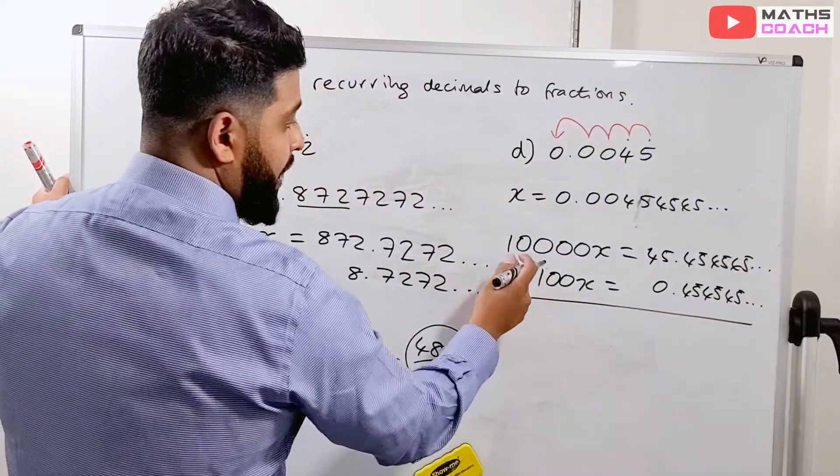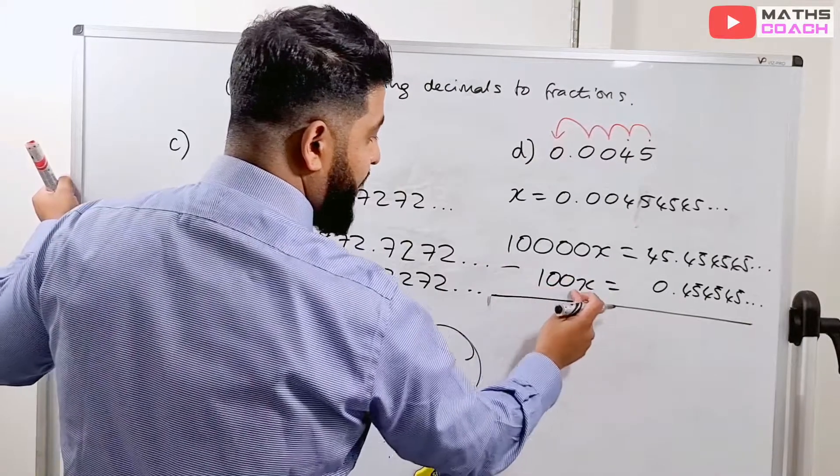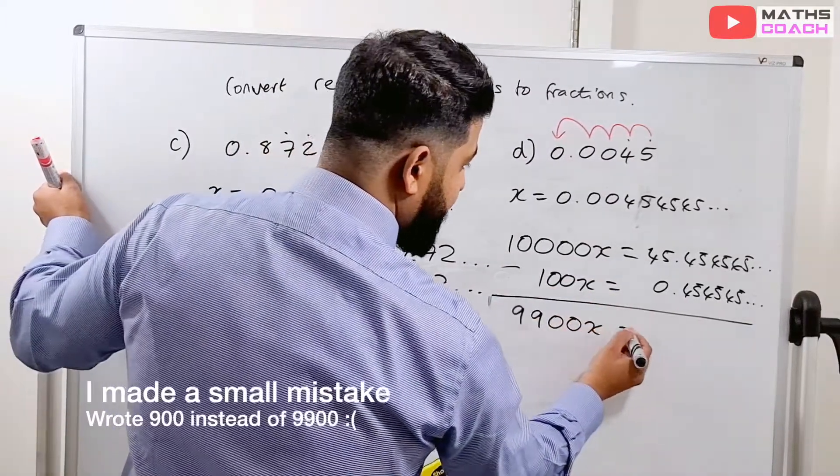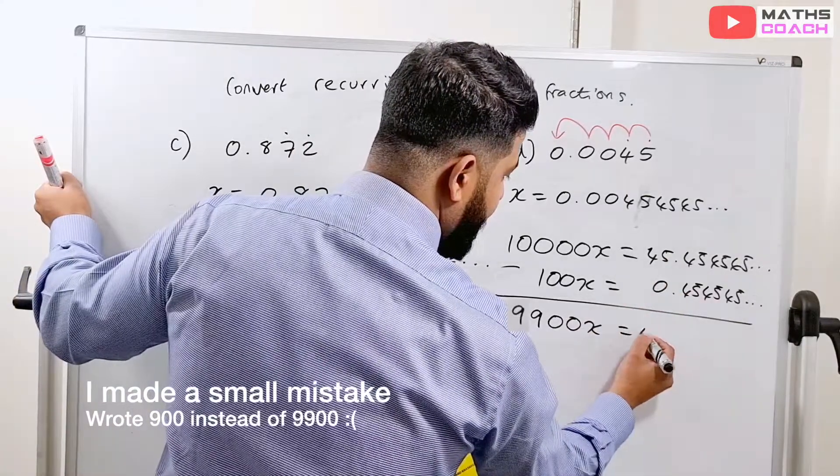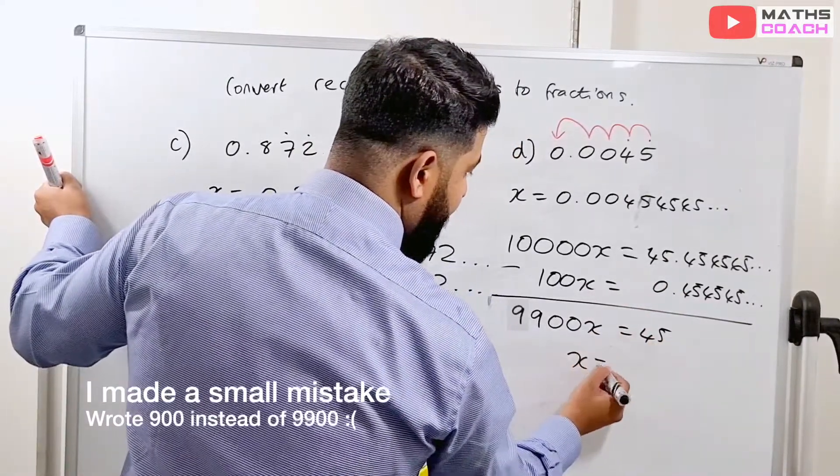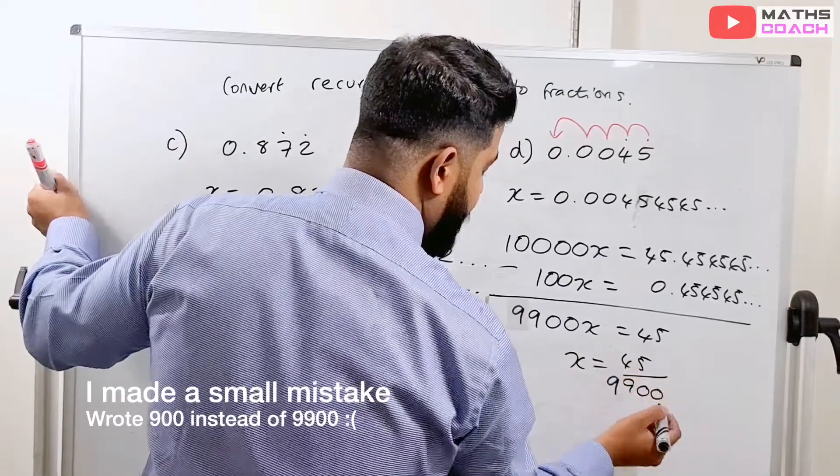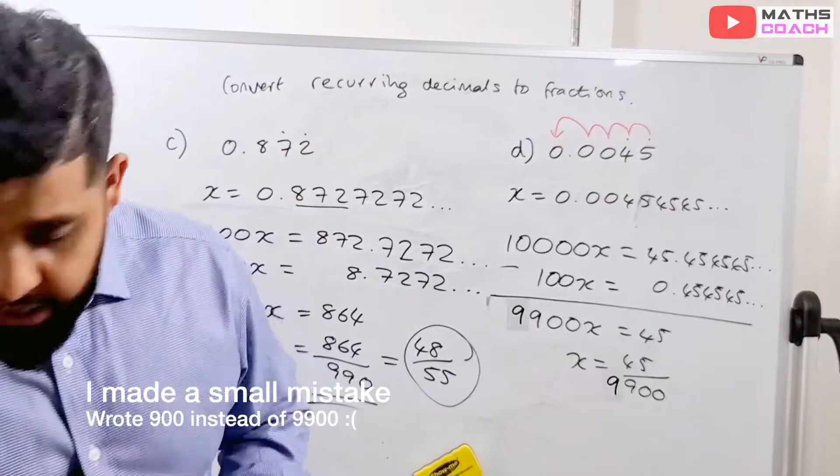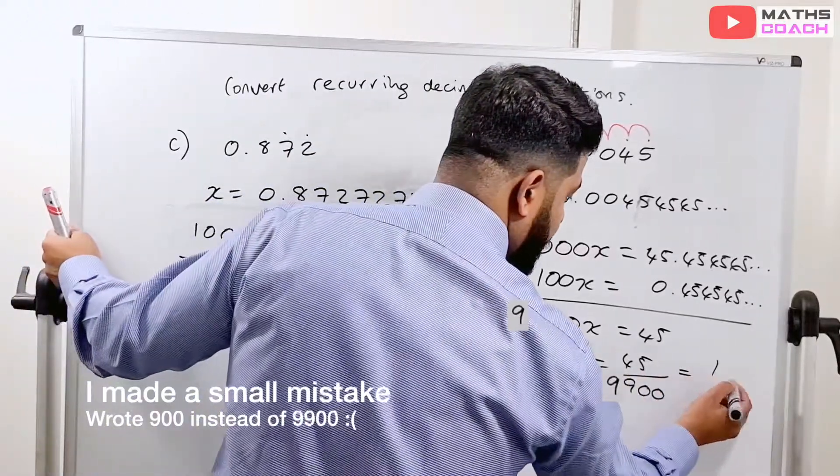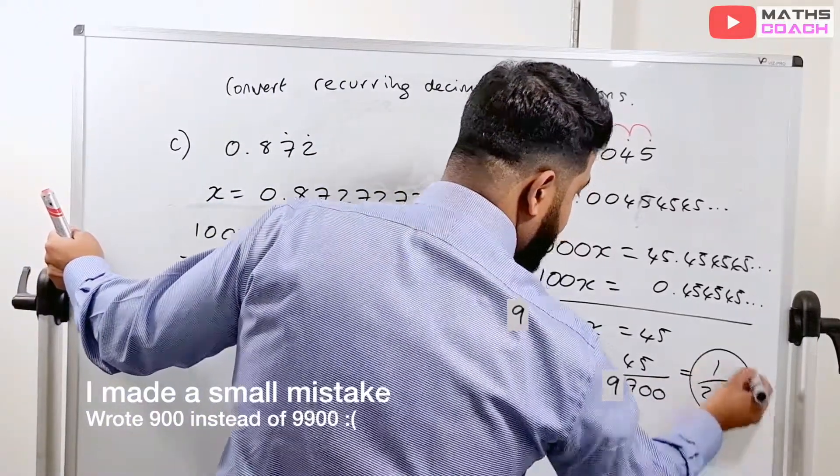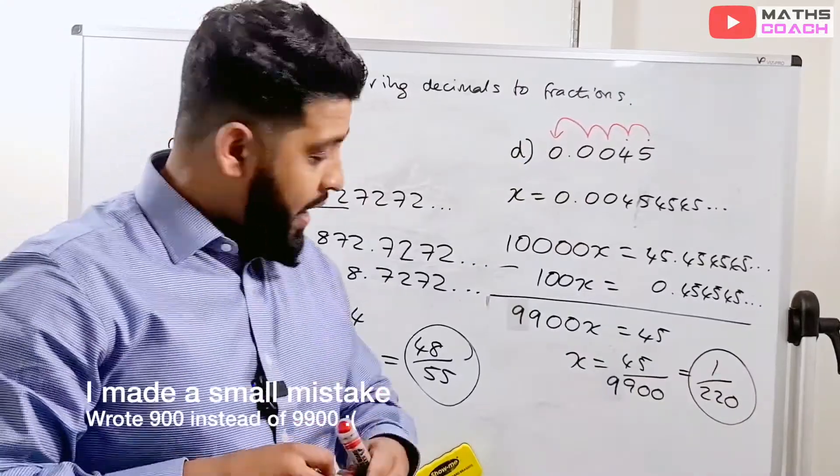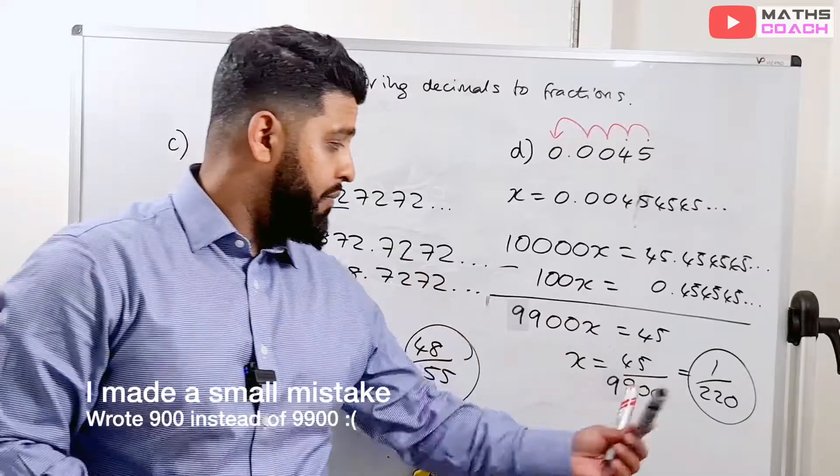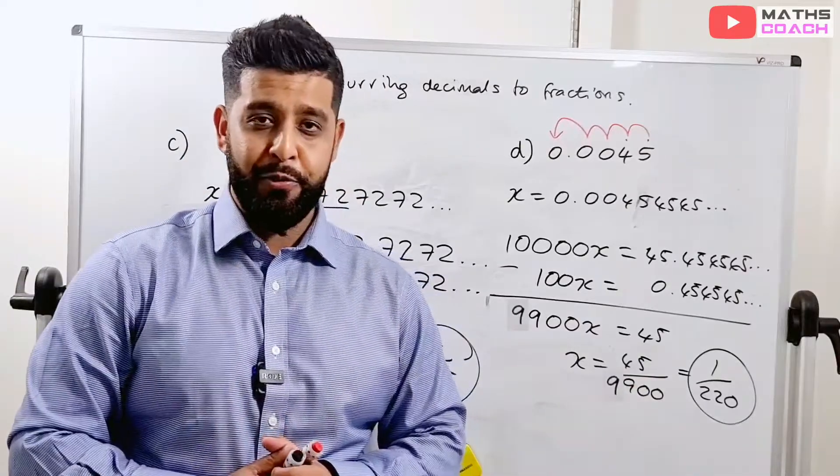Now, I will do 10,000x take away 100x, which is 9900x, and 45 take away nothing is 45, and x is equal to 45 over 9900. Once again, try to simplify that, which definitely does simplify, and I got 1 over 20 as my final answer, and this answer is good enough, but like I said previously, try to simplify so that you get your fractions in order.